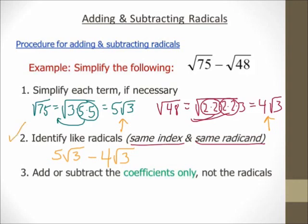Since they are like radicals, I can go to step number 3. If they weren't like radicals — say it was 4 cube root of 3 instead — I would just leave it as is. But since these are like radicals, step 3: add or subtract the coefficients only. Treat it like 5x minus 4x, which is 1x. So 5 square root of 3 minus 4 square root of 3 is square root of 3. You don't need to write the 1. That's your final answer.